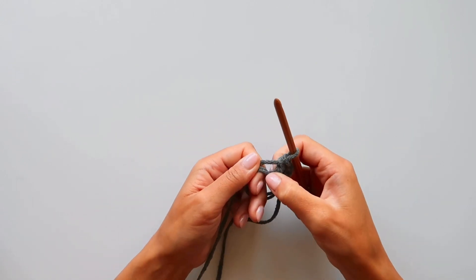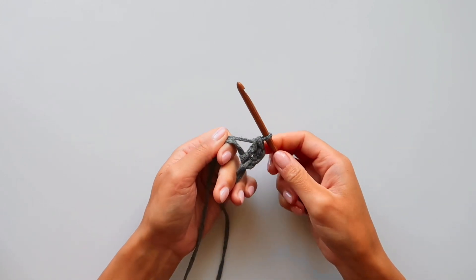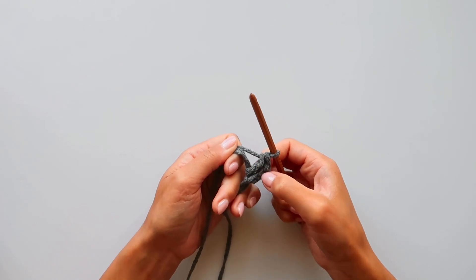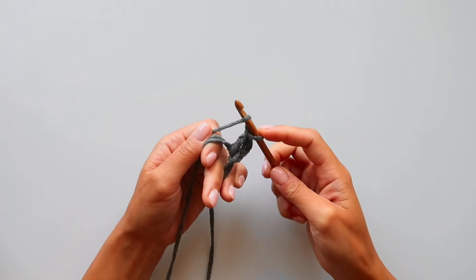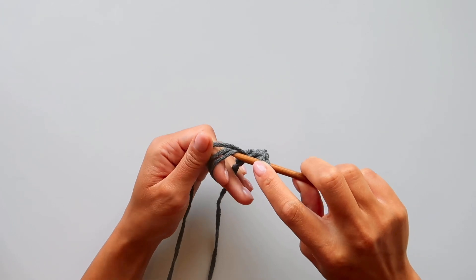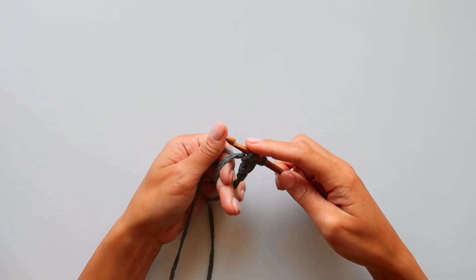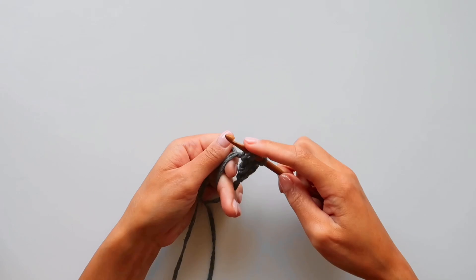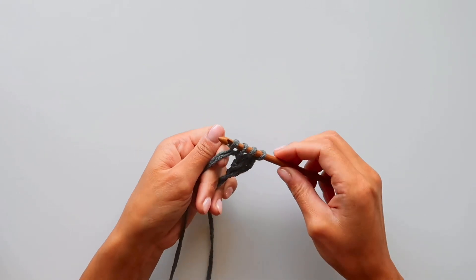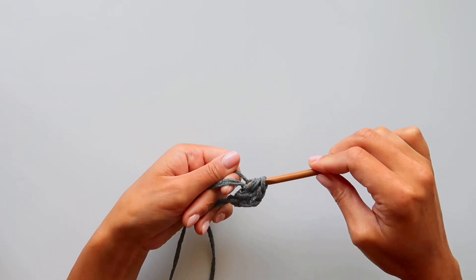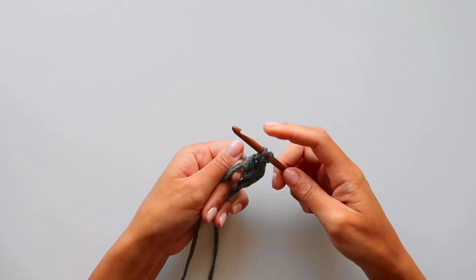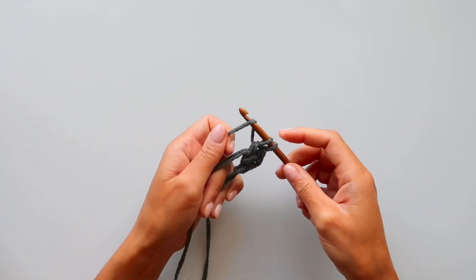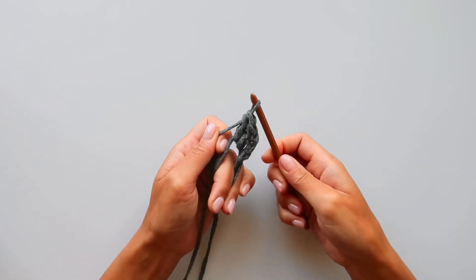So you will basically do your double crochet in the usual way you do them. I will continue in this ring in total of 12 double crochets, and the first chain of three will act as one of them. And this will depend from pattern to pattern how many double crochets it will be in the ring.